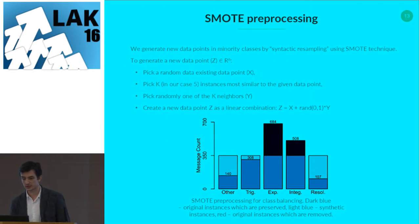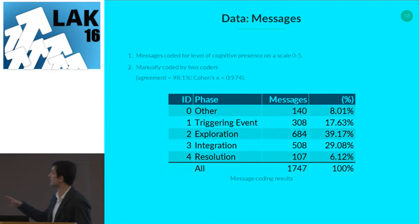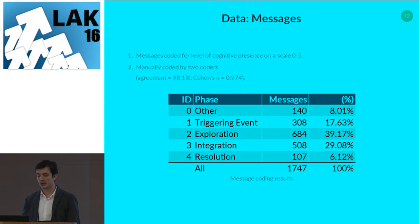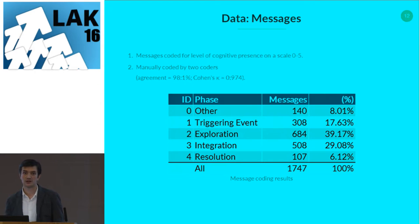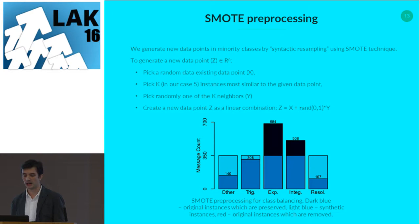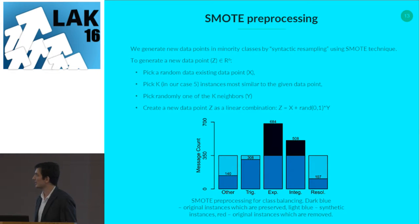The first thing we noticed is a very disproportionate number of messages in those four phases — this is actually reported in the literature. Students spend more time exploring than anything else, which makes sense. But it's a challenge for classifiers. So we used SMOTE preprocessing to even out the class distribution. SMOTE stands for Synthetic Minority Oversampling Technique.